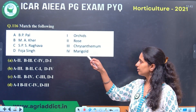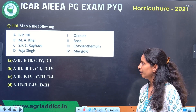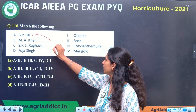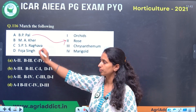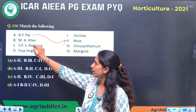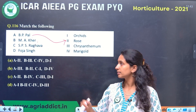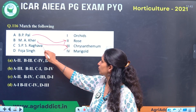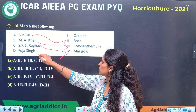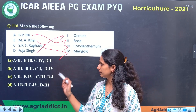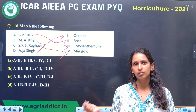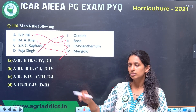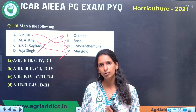Next question relates to scientists who worked on different crops. B.P. Pal is a very famous rose breeder. N.A. Kher is a well-known scientist who worked on Chrysanthemum. S.P.S. Raghava worked on Marigold. Foja's work is related to Orchid. Similarly, they can ask about different scientists for other crops — you can find a list in Essence of Horticulture, so go through it for vegetables and fruits as well.